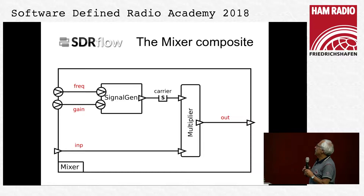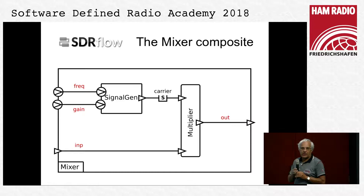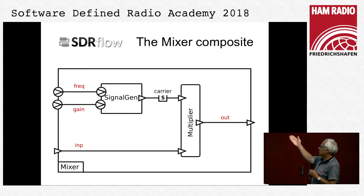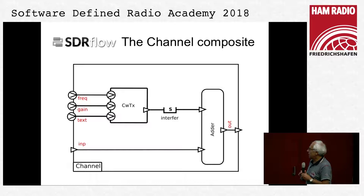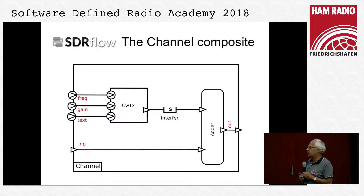The mixer consists of two parts: a signal generator which generates a complex exponential signal, and a multiplier which multiplies the carrier with the input signal and puts it at the composite output. The channel demonstrates how you could reuse some components — we use the CW transmitter to generate the interfering signals, and use an adder which adds the interfering signals to the CW transmission.